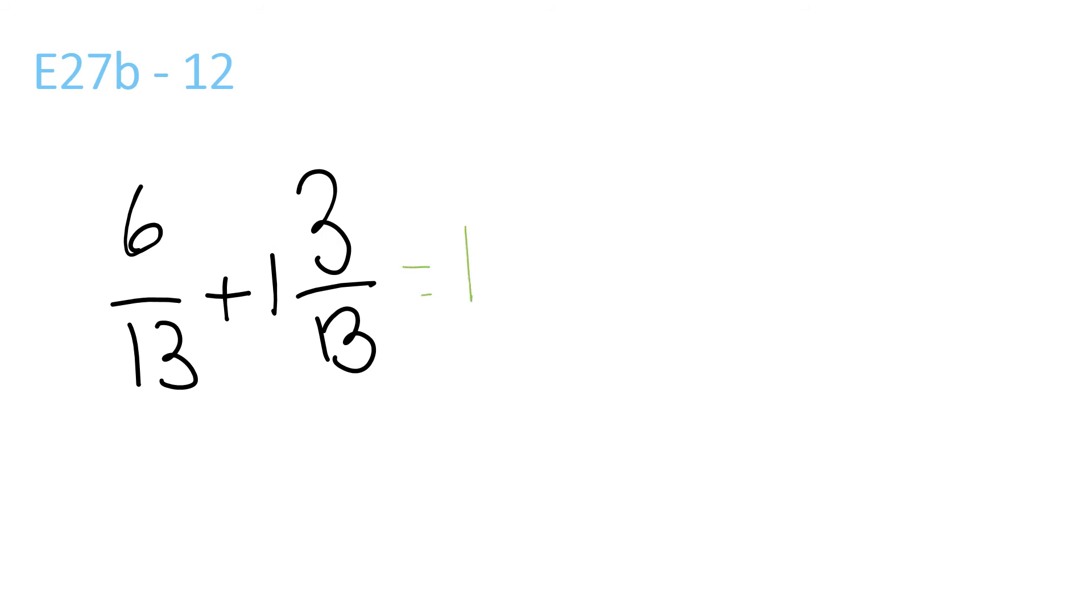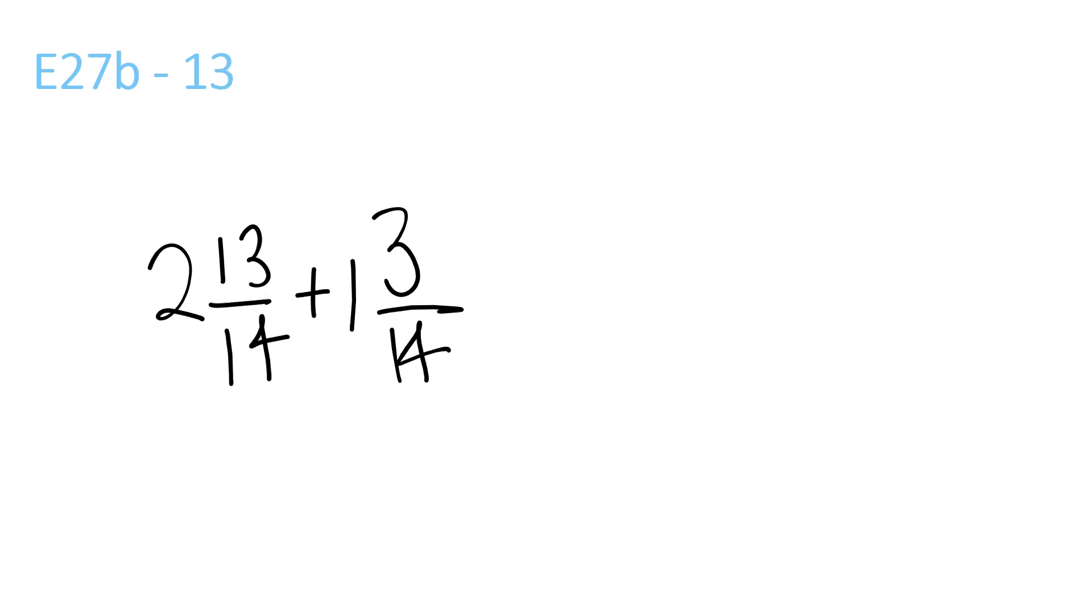1 plus nothing is 1. 6 plus 3 is 9 over 13, and that can't be simplified. 2 plus 1 equals 3. 16 over 14 equals 4 and 2 over 14, which equals 4 and 1 over 7.